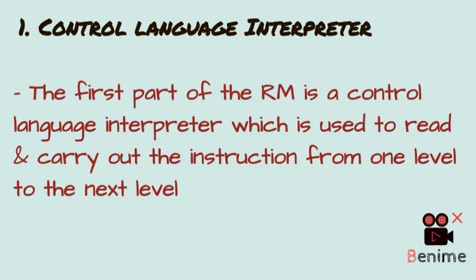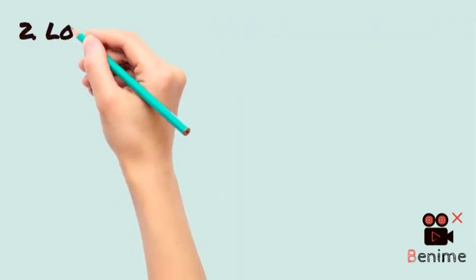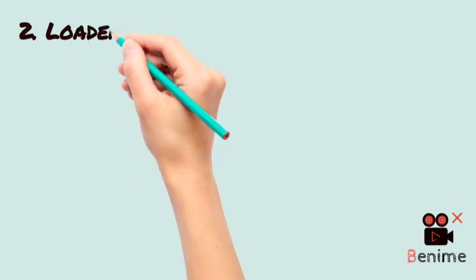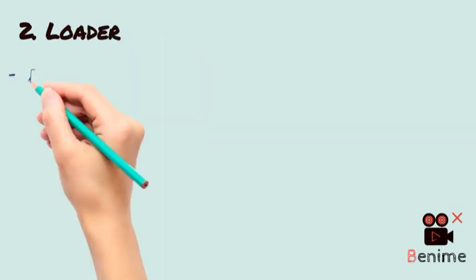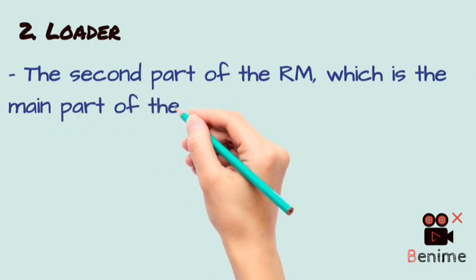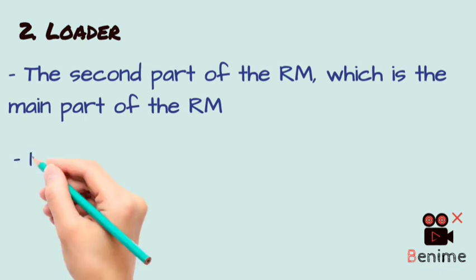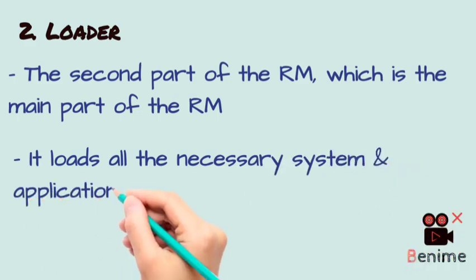The second part of resident monitors is called the loader. This is the main part. Its important work is to load application programs or whatever system programs need to be loaded into memory — that is, simple loading.